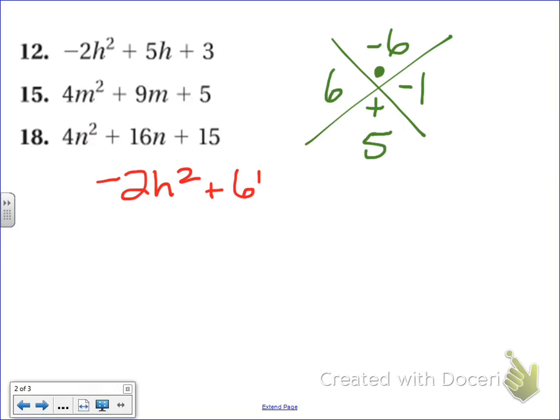So I'm going to have negative 2h squared plus 6h minus 1h plus 3. So all I did was change the original trinomial into a quadnomial, or four terms. And now that I have four terms, let's make them into two different groups. I'm going to group the first two terms together, and then the second two terms together. And then I find the GCF of each parenthesis.